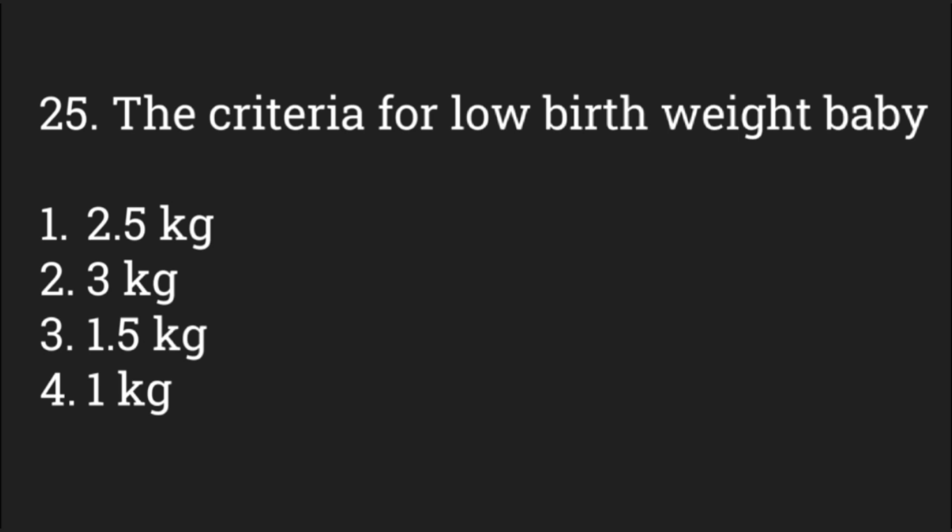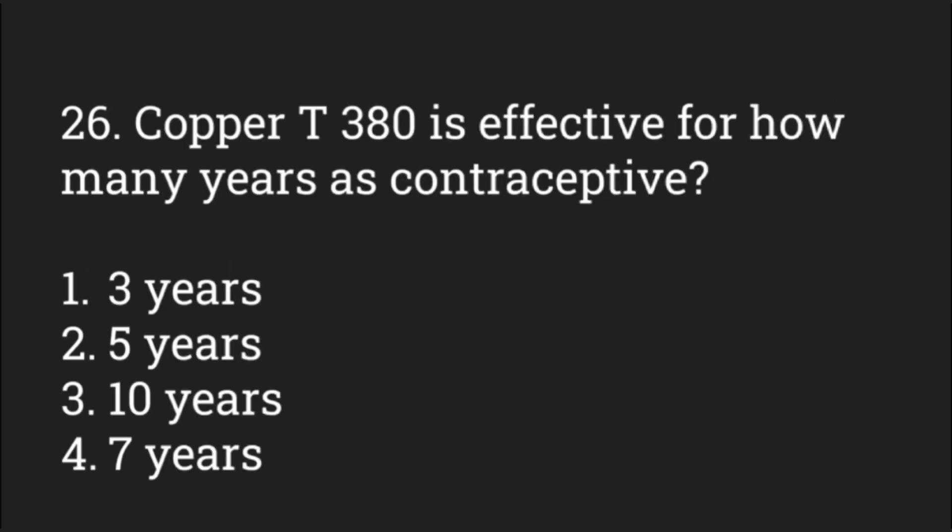The criteria for low birth weight babies is — options: 2.5 kg, 3 kg, 1.5 kg, 1 kg. The answer is 2.5 kg. Copper T 380A is effective for how many years as a contraceptive? Options: 3, 5, 10, or 7 years. The answer is 10 years.